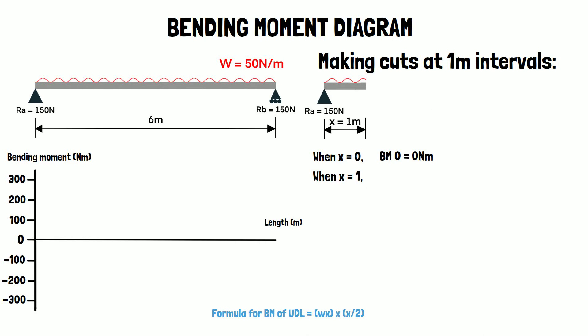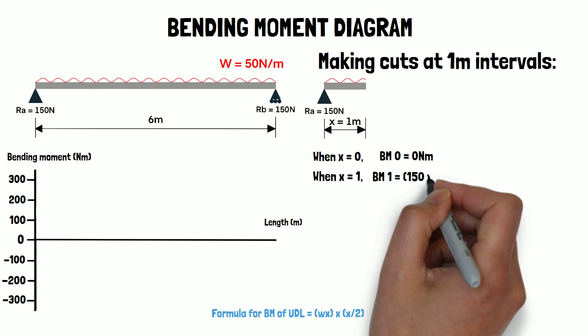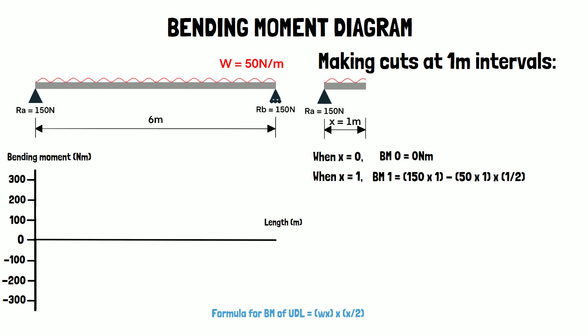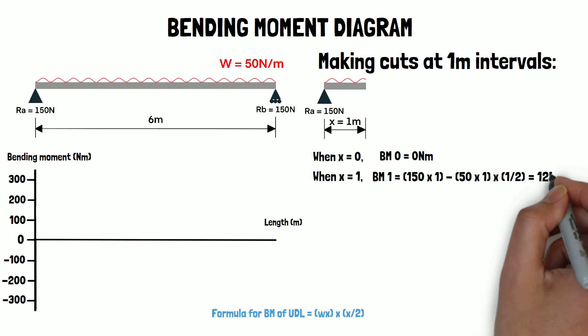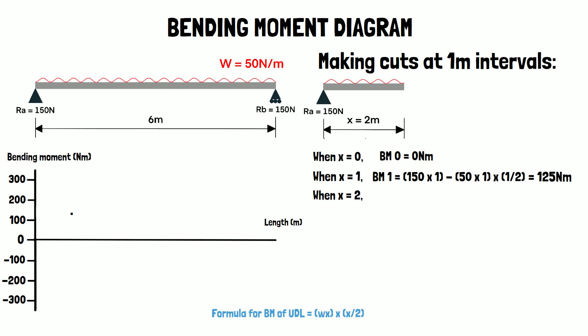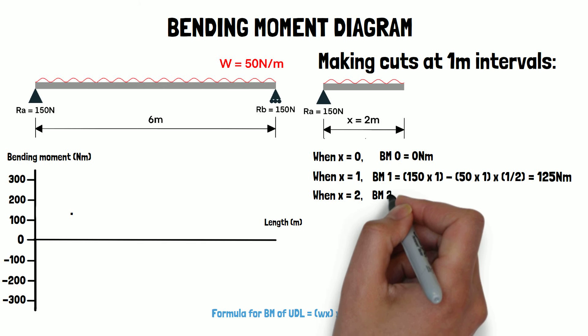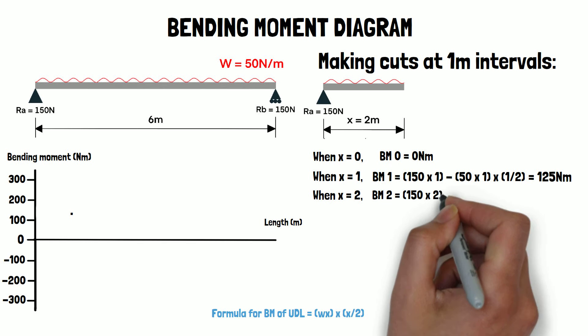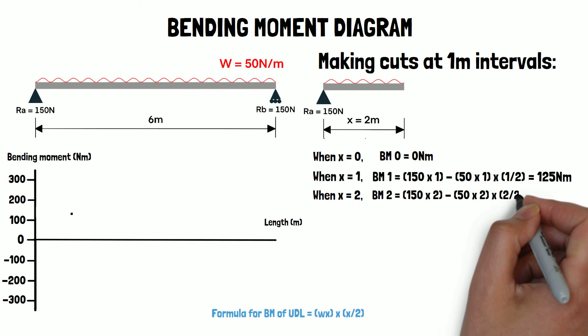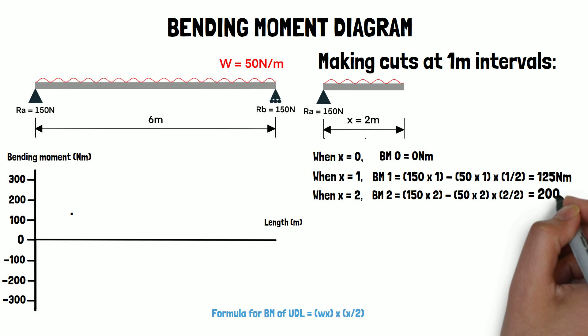When x equals one, the bending moment is 150 times 1 minus 50 times 1 times 1 over 2, which equals 125 newton meters. When x equals 2, the bending moment becomes 150 times 2 minus 50 times 2 times 2 over 2, which equals 200 newton meters.